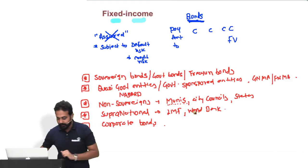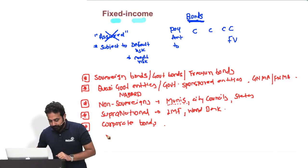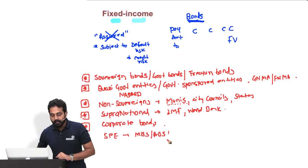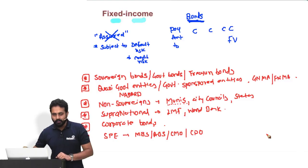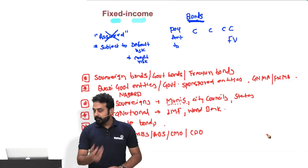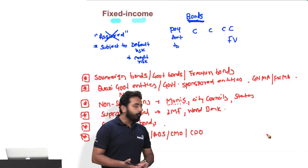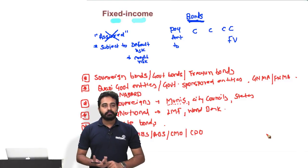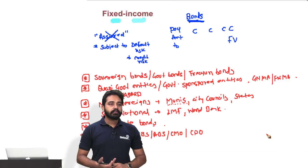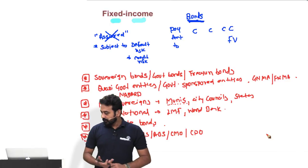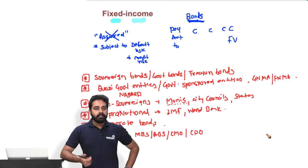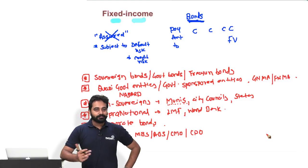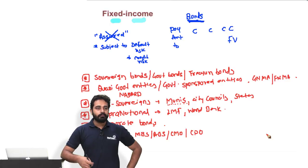We are missing an important product: bonds issued by SPEs — Special Purpose Entities — which typically fall under the category of MBS, ABS, CMOs, and CDOs. MBS stands for Mortgage-Backed Security, ABS for Asset-Backed Security, CMO for Collateralized Mortgage Obligation, and CDO for Collateralized Debt Obligation. It's new now, but will become very natural and easy 30 days from now.